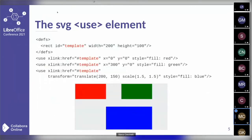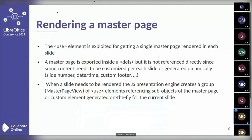I suppose you are familiar with the basics of the SVG markup language. Anyway, I want to remind you of the use element. This use element allows to reuse more than once an artwork — in this case a simple rectangle — allowing to change its geometry and style features. So we can define an object just once and use it many times. The use element is exactly what is used for getting a single master page rendered in each slide.